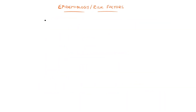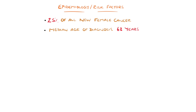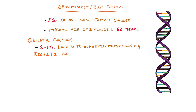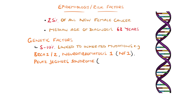Breast cancer accounts for nearly 25% of all new cancers in females, and the median age of diagnosis is 63. Factors affecting breast cancer risk include genetics, with 5–10% being thought to be linked to inherited genetic mutations, with BRCA1 and BRCA2 being the most common. Others include neurofibromatosis type 1, STK11 — which is linked to Peutz-Jeghers syndrome — and hereditary diffuse gastric cancer.